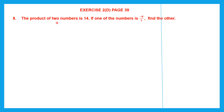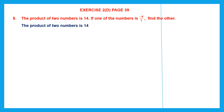We have been given the product of two numbers and we have been given one number. Product means when you multiply, the answer that you get is called product. So we have multiplied two numbers and we've got the answer. The answer is given and one number is given. We have to find the other number.